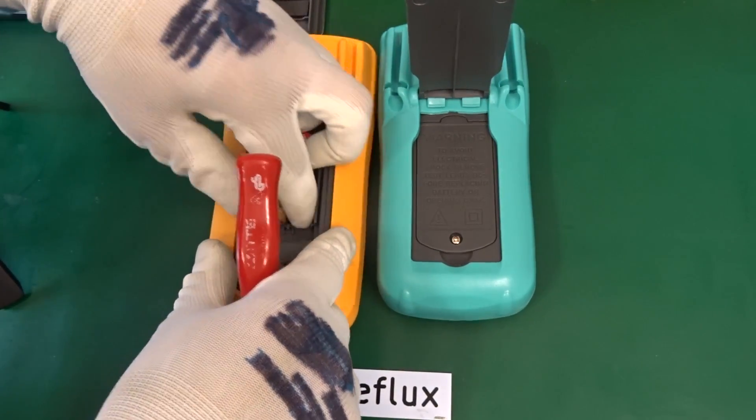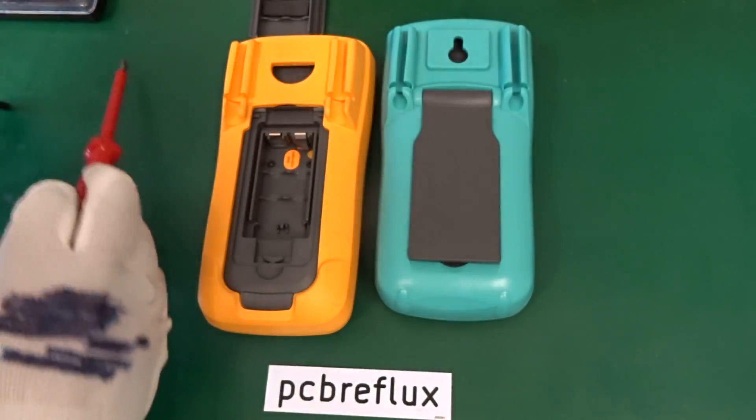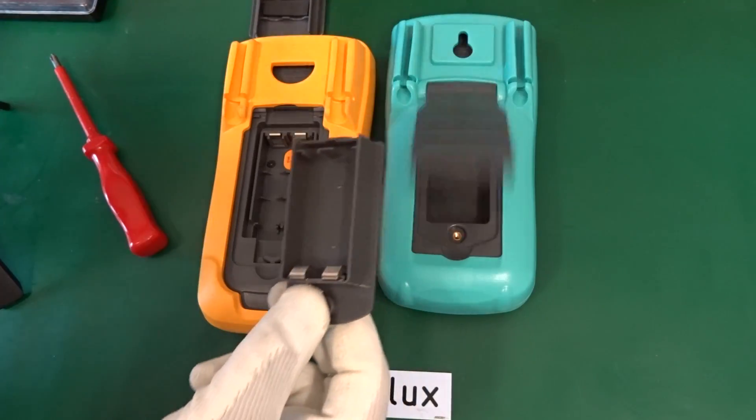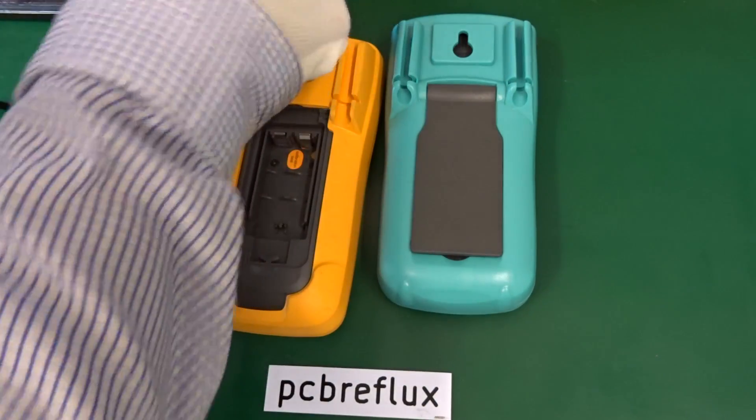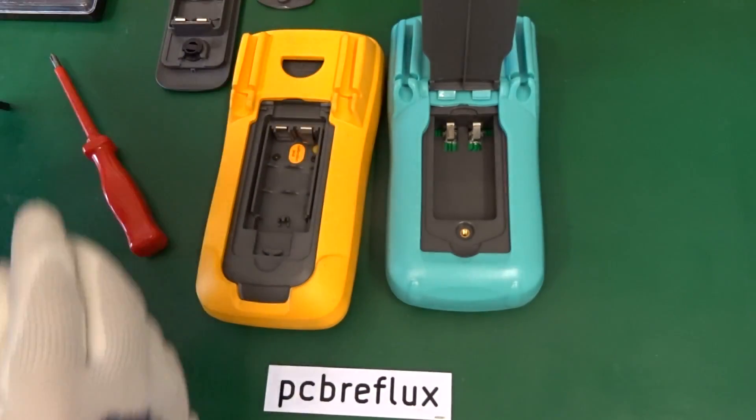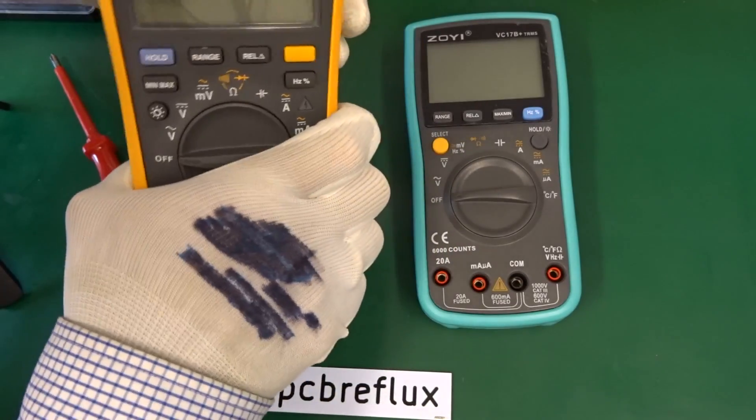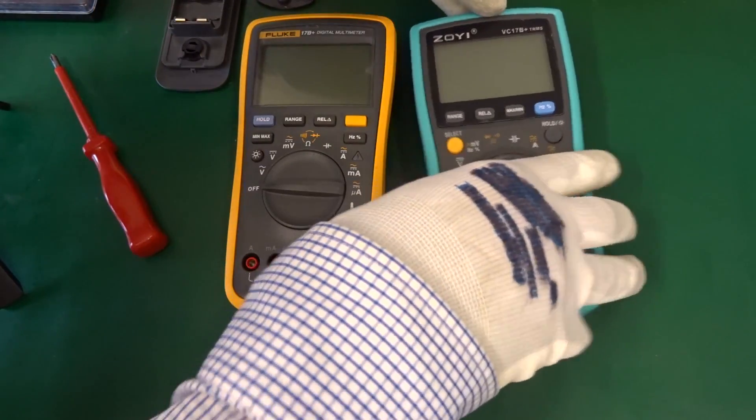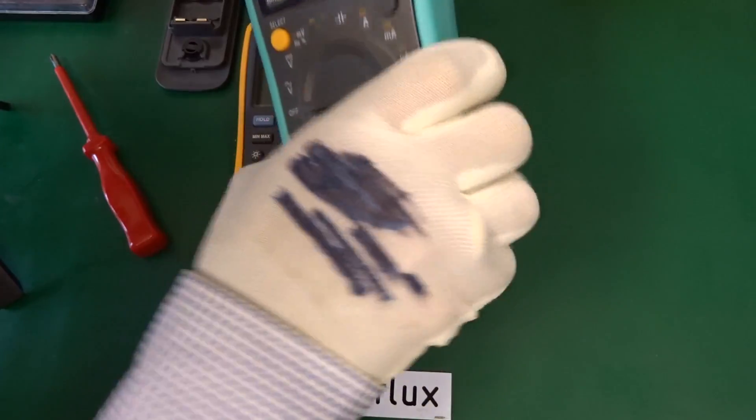And let's remove the batteries. So here we have two connectors. And for the ZOYI, we have to open it with a screwdriver. And as in comparison, it looks very similar to the Fluke. And also we have two AA batteries that fits in the compartment. So we can say this is similar.